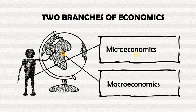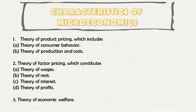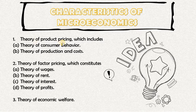Saan po ba umiikot yung tinatawag nating micro economics? Let's talk about its characteristics. The characteristics of micro economics are divided into three: the theory of product pricing, the theory of factor pricing, and the last is economic welfare.